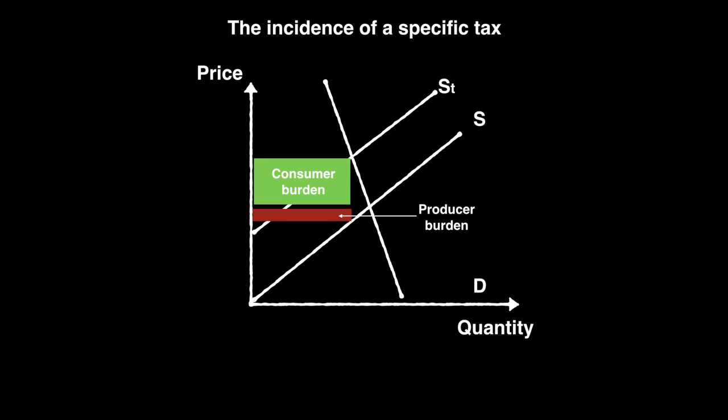I'd encourage you to pause this video and replicate this diagram in your notes. Once you've done that, label the new consumer surplus, producer surplus, and deadweight loss. You should be able to draw and understand this diagram for all elasticity ranges, from perfectly inelastic demand to perfectly elastic demand.